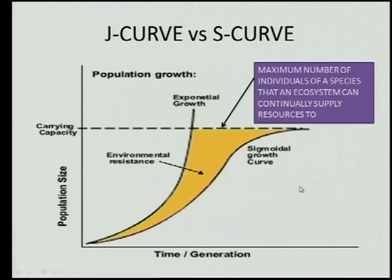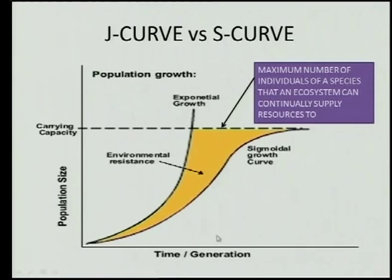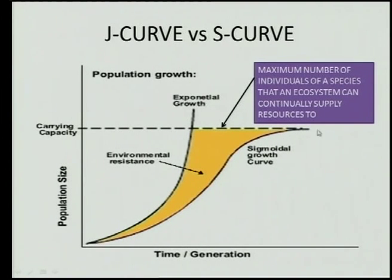The J curve grows past the carrying capacity, which means when it gets there, there won't be enough food or living space, and we might find a massive dying-off of individuals — a total decimation of the population — and it may have to start all over again. That's typical for something like insects. The S curve is much more stable, and there you've got your carrying capacity — the number around which equilibrium is reached — because environmental resistance prevents this environment from supporting a bigger population.